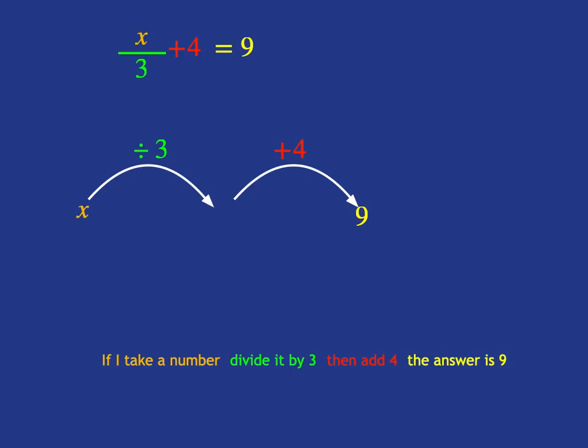Now we know that the order in which things have been done to x is divide by 3, then add 4. We can then go about solving for x by simply reversing the process, looking for the inverse operations. So what we need to do is, firstly, we need to subtract the 4 and we'll get 5. And then we need to multiply by 3, and we'll get our solution that x is equal to 15.